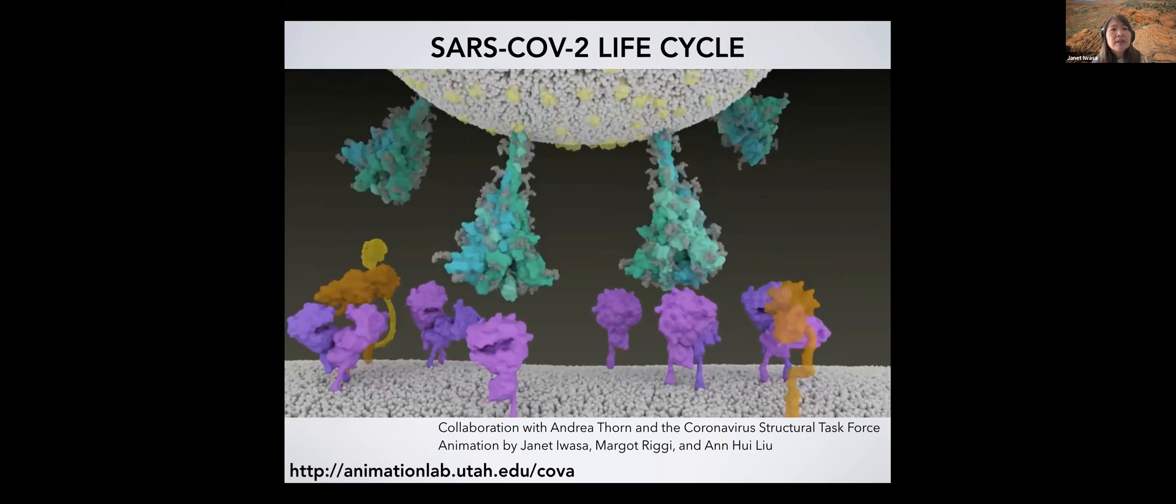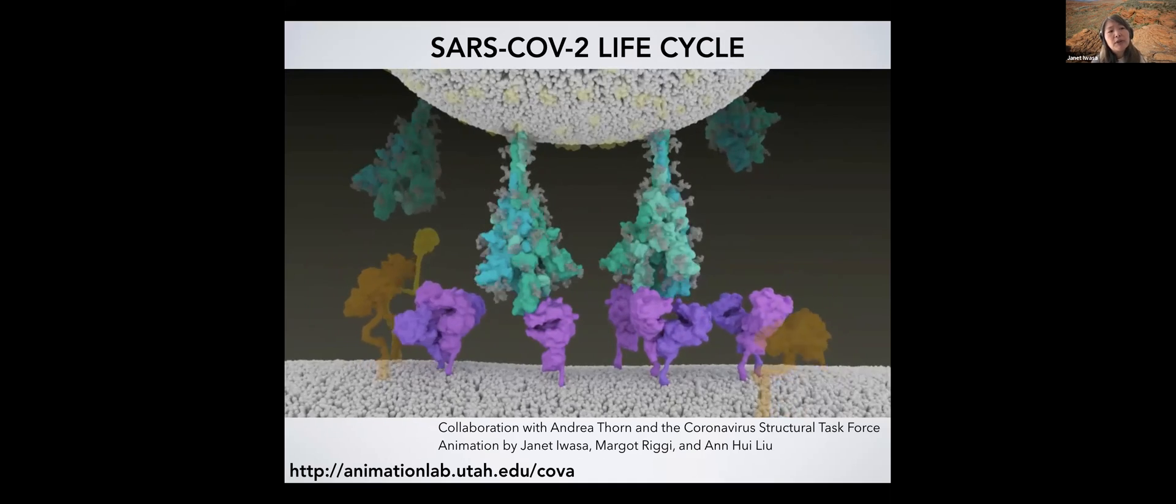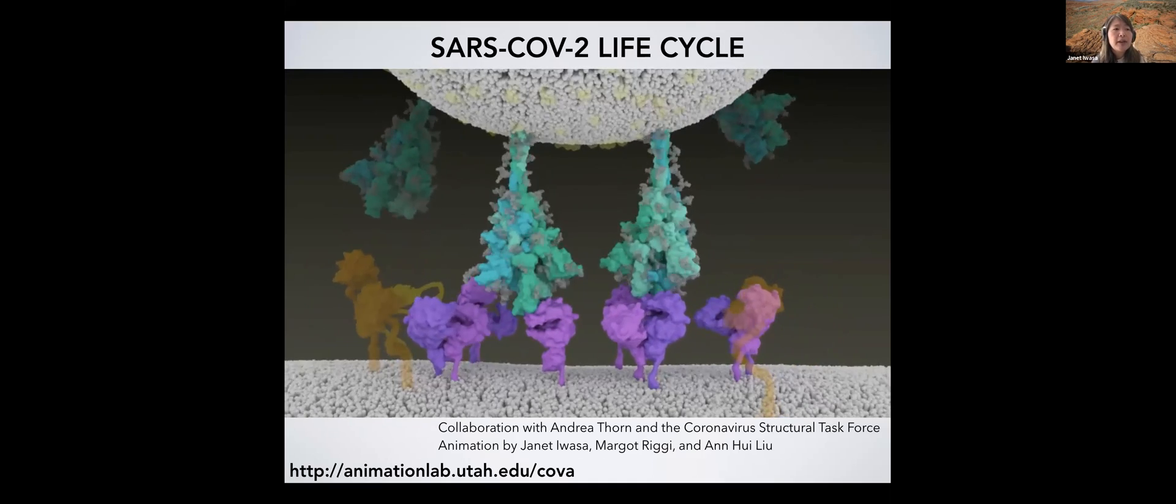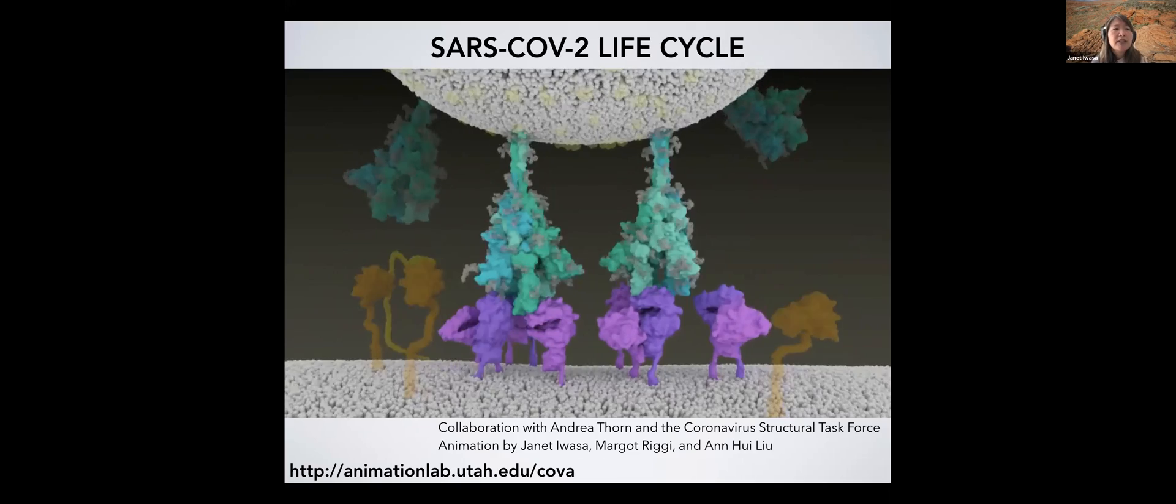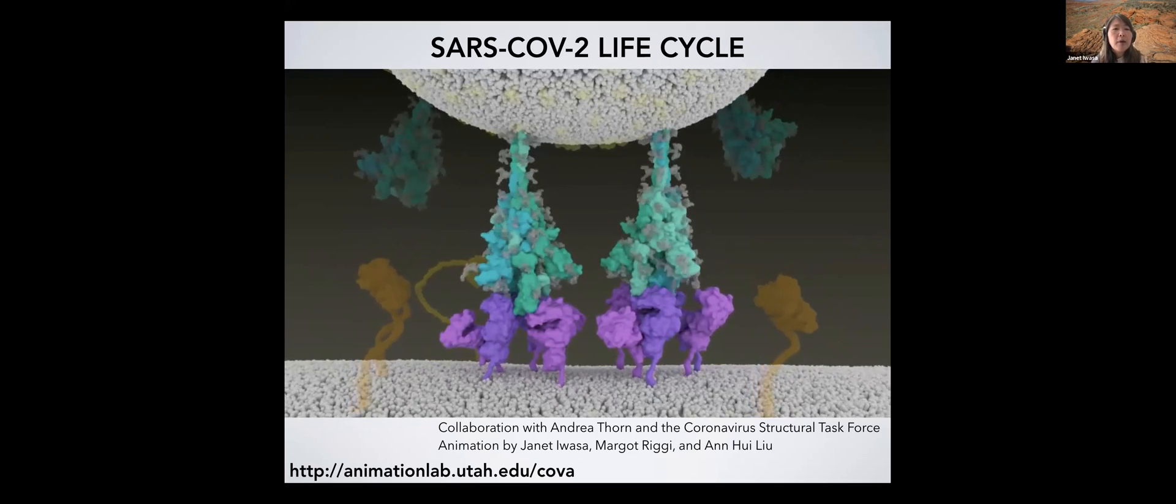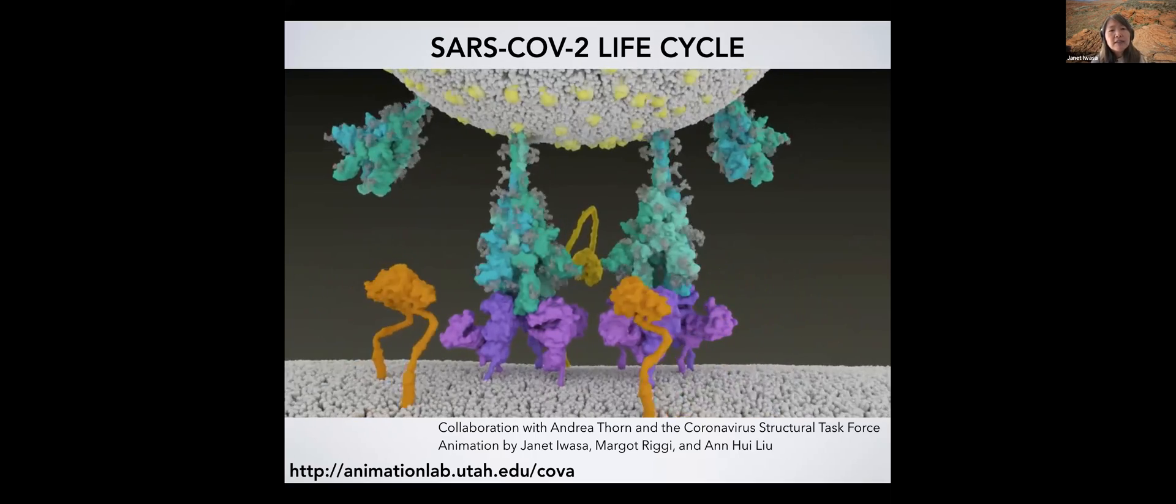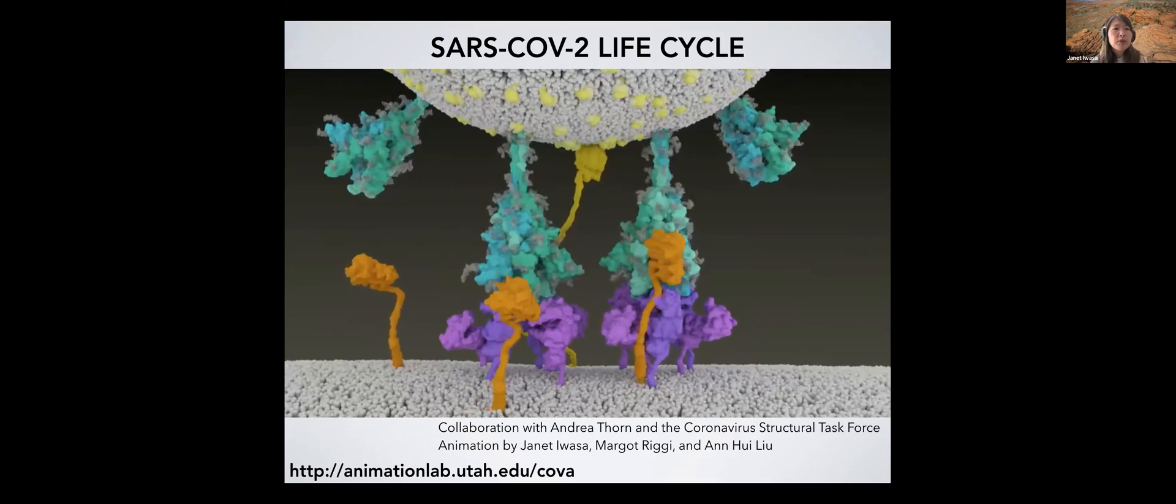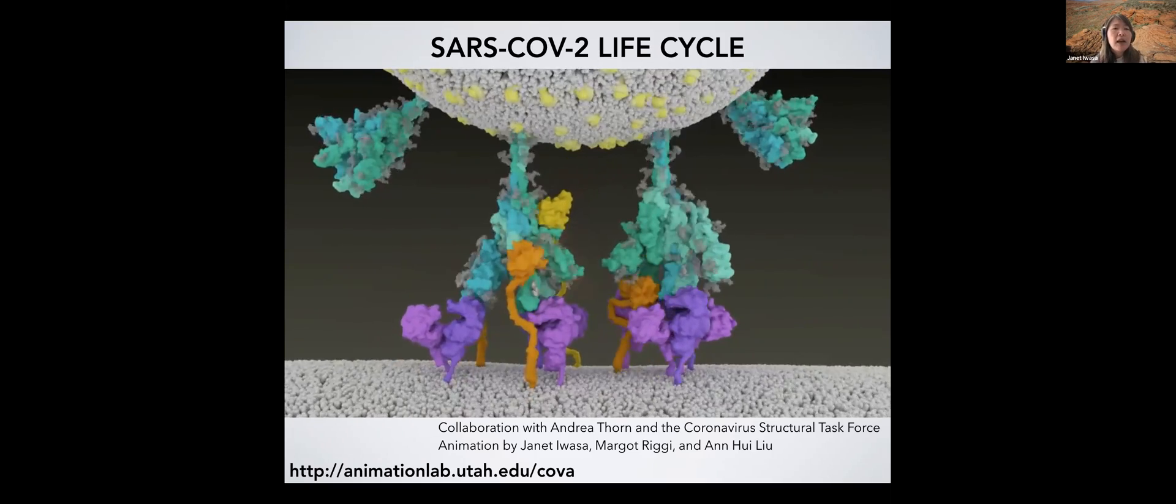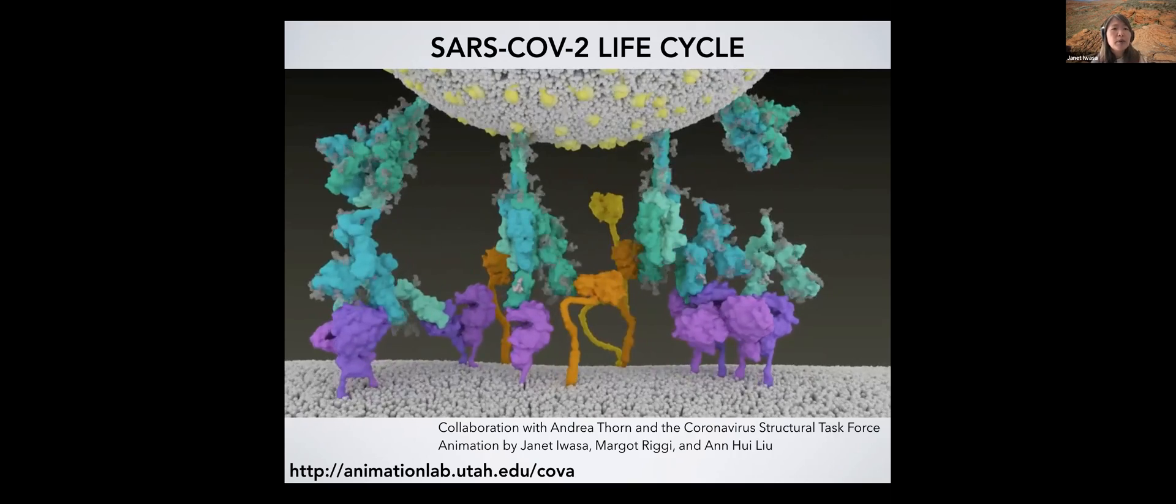The next part of the animation focuses on how the virus gets in. So we can see these proteins on the respiratory cell surface, which is shown at the bottom. We have these purple proteins called ACE2 that are able to bind to the spike protein on the virus, which is shown here again in teal. So ACE2 binding is thought to kind of lock the spike protein in a specific kind of shape that then enables it to get opened, to stay in this open position.